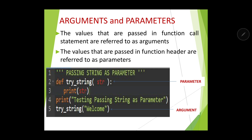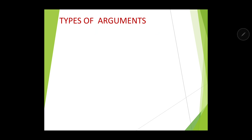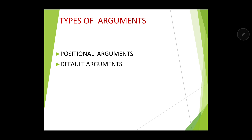Now, the main topic of discussion of this particular part is the types of arguments. The first type is positional arguments, then there are default arguments, and finally we have keyword or named arguments. Let's discuss them one by one.